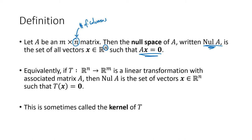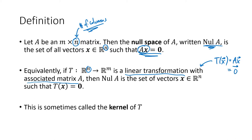Another way to think about this is the corresponding linear transformation for A. If T has Rn as its domain — the domain of our linear transformation again matches the number of columns — and T of x equals A times x, then saying A times x equals zero is just saying T of x equals zero. When we think about it in terms of a linear transformation, we call this the kernel of T. Kernel of T and null space of A are two different names for the same thing.